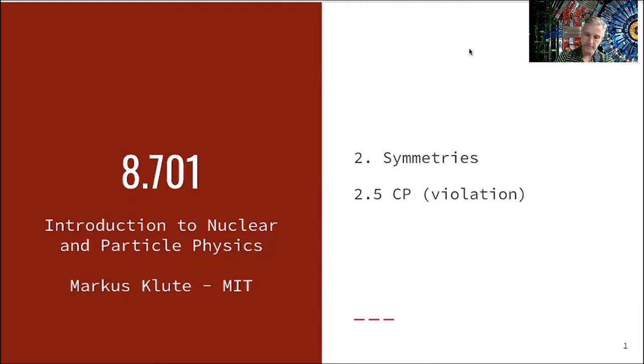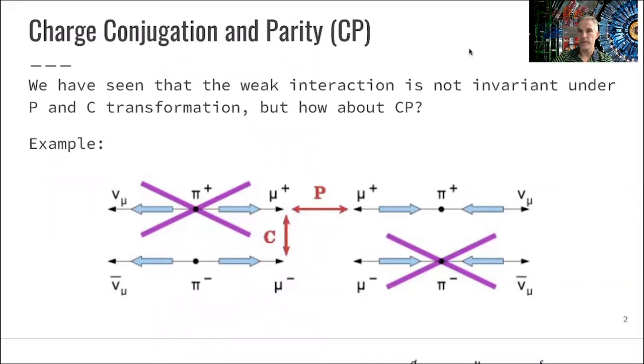In previous lectures, we discussed that the weak interaction is not invariant under parity and charge conjugation transformation. But now we can ask the question, how about CP? A transformation which does charge conjugation and parity transformation.